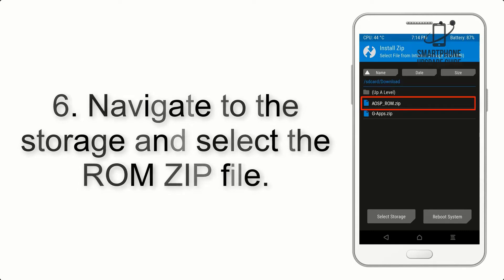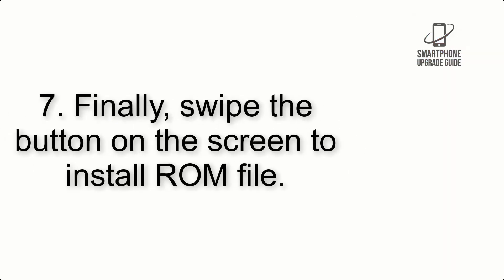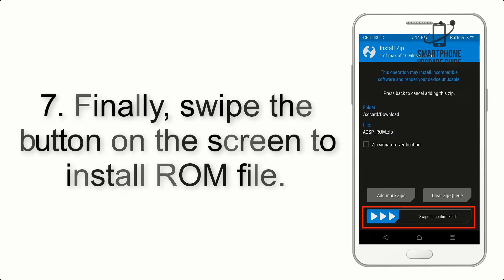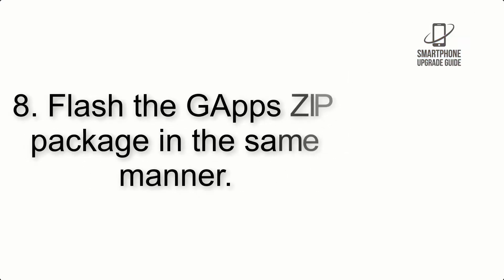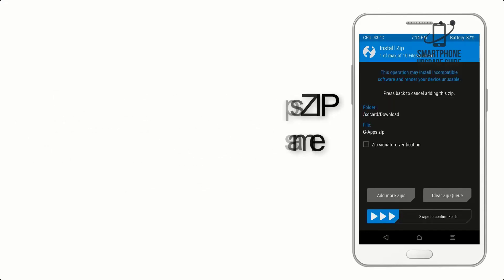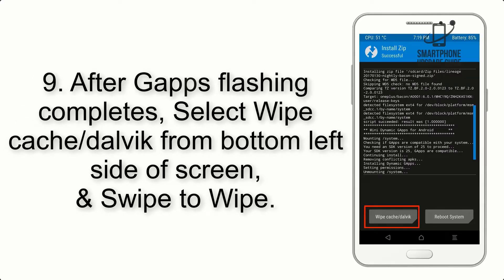Step 5: Go back to the recovery main screen and tap on the Install button. Step 6: Navigate to the storage and select the ROM zip file. Step 7: Finally, swipe the button on the screen to install the ROM file. Step 8: Flash the GApps zip package in the same manner.